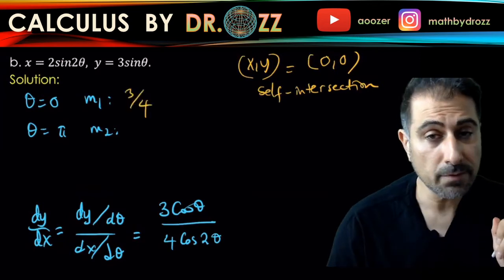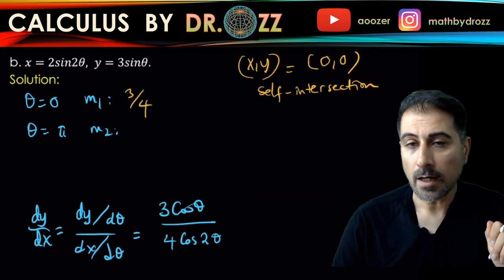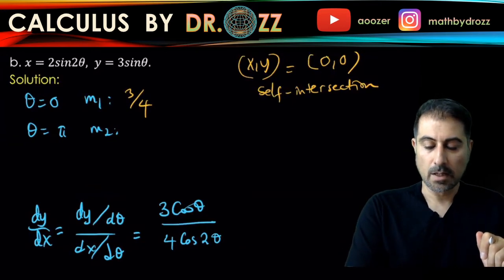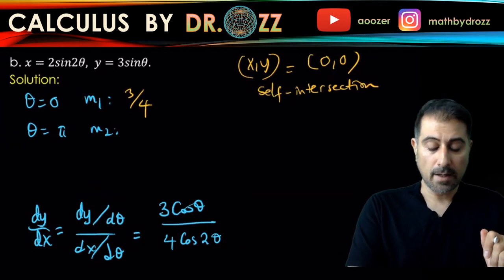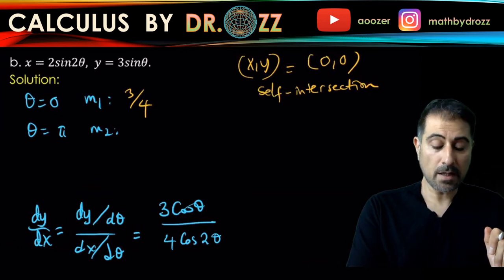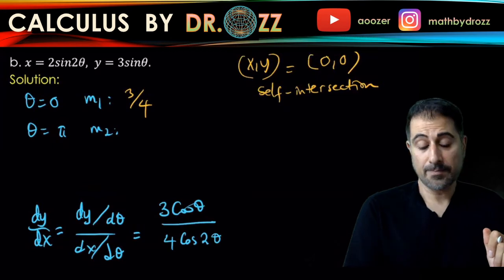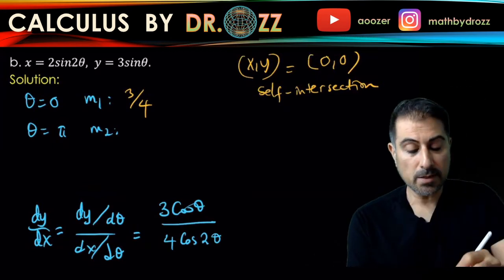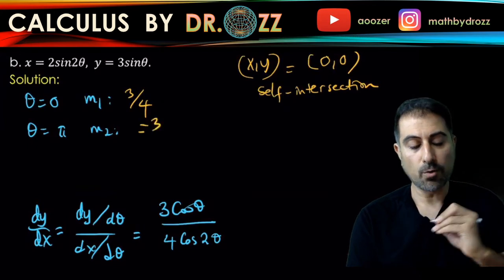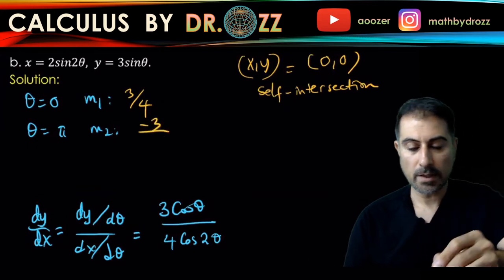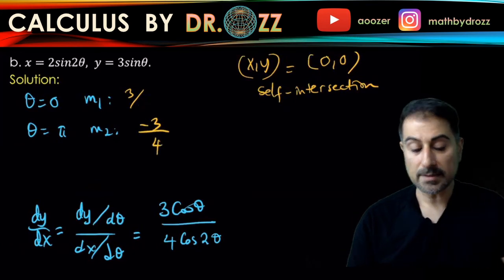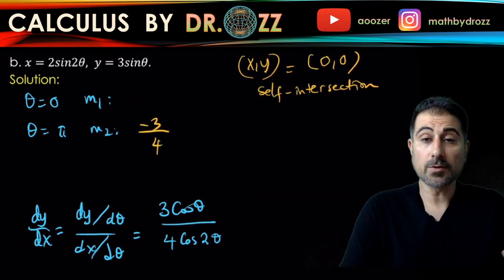Use your calculator by the way. If you're using your TI-84, set it to radian mode and do those calculations. For m2 at theta equals pi, we have three times cosine pi divided by four times cosine two pi. Cosine pi is negative one, so it's negative three at the top, and cosine zero is one and four in the bottom. So three quarters and plus or minus, in fact, three quarters for the slopes.